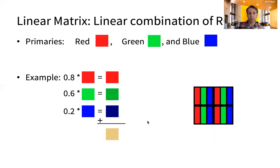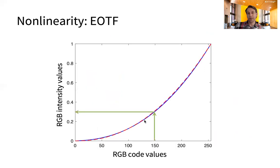But we must not forget that the linear math can only be done with linear RGB intensities, not the nonlinear RGB code values. The LUT, representing the EOTF, allows us to transform back and forth between linear and nonlinear RGB values.